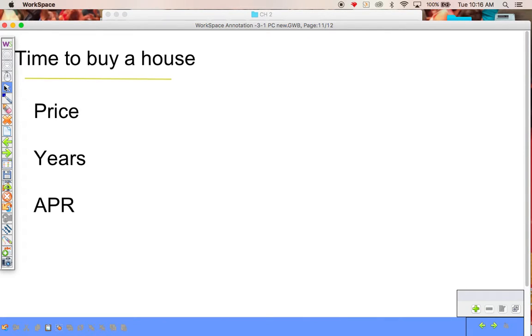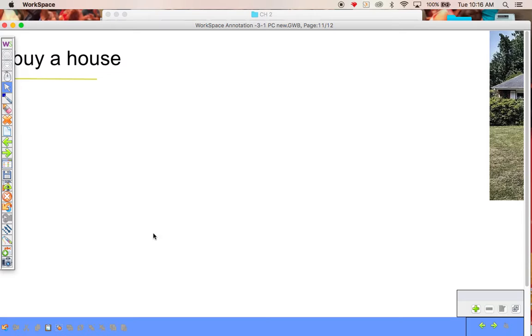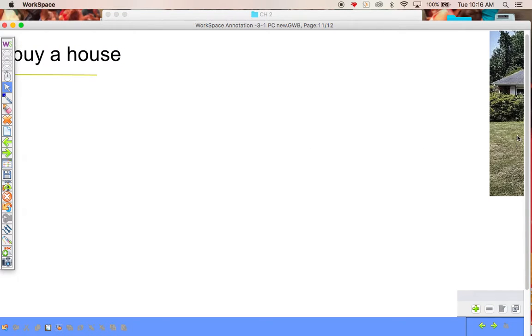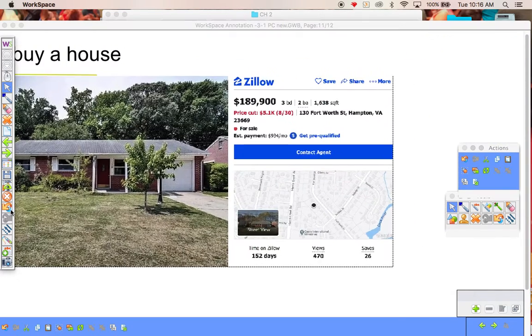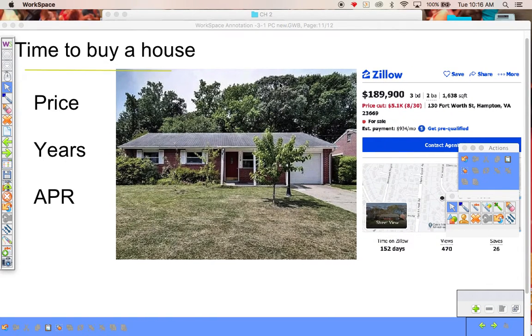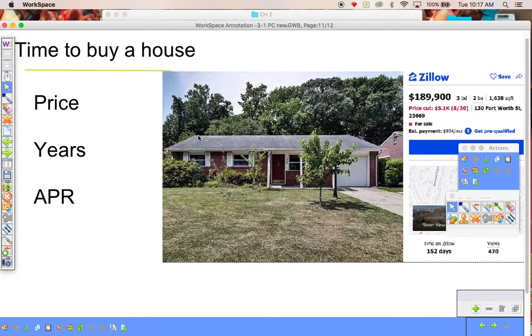Next one, we're going to buy a house. We're going to pick a price, years, and an annual percentage rate. So we're going to buy this house. Found it. Decent neighborhood, or good neighborhood, we'll say that, of Fort Worth. Little starter house for us. I just got out of college, I've got some money, I want to buy a house. I'm going to buy this house right here for $189,900.